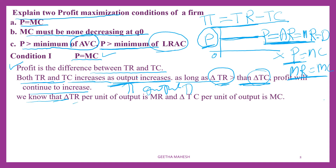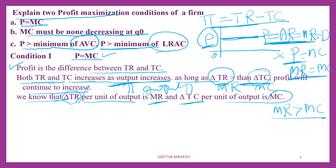The change in TR per unit of output we call MR, and the change in TC per unit we call MC. So change in TR is nothing but MR, and change in TC is nothing but MC. As long as MR is greater than MC, the firm will continue to increase its profit, and so it is not going to stop production at that level where MR is greater than MC.